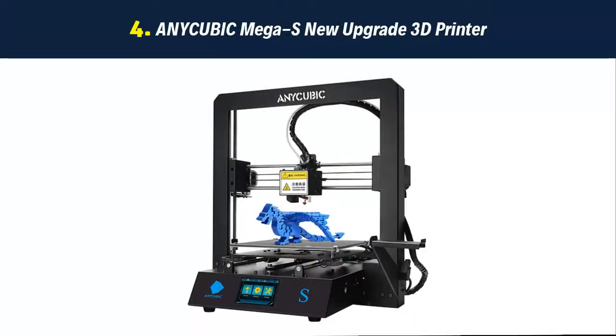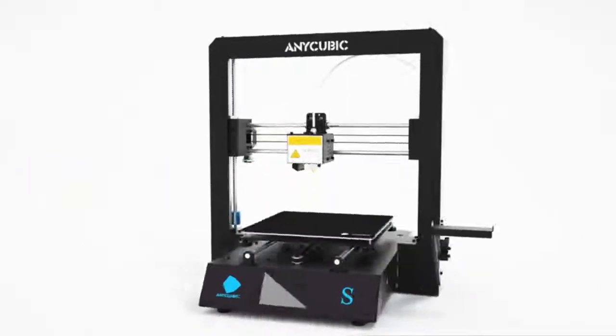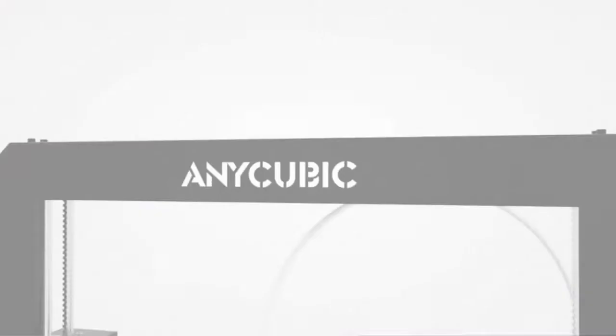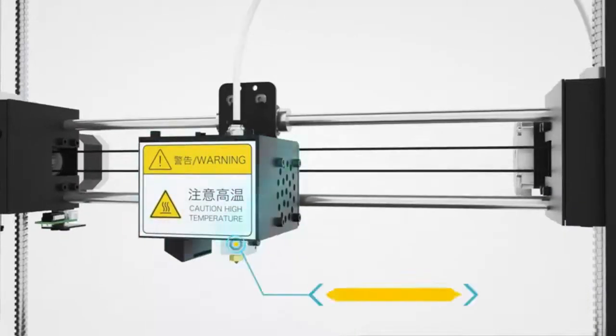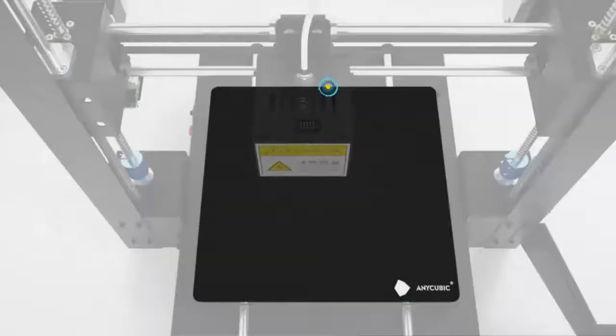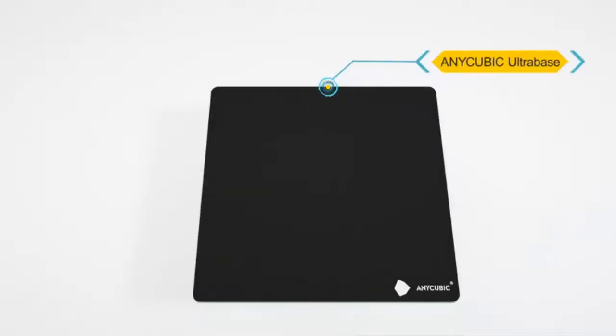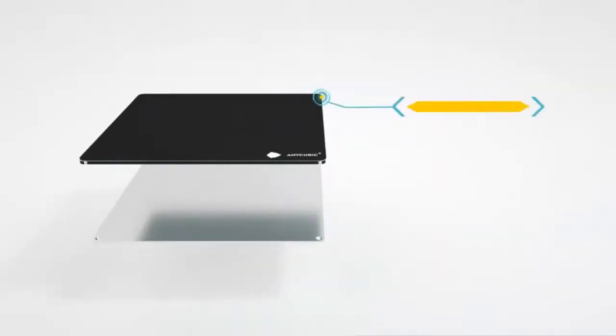Our list at number four: Anycubic Mega S new upgrade 3D printer. Works out of the box. Three steps to set up Anycubic Mega S 3D printer with 8 screws and 3 cables for minutes, not only meets fast assembly needs for expert users, but also friendly use to beginners. Printing volume reaches 8.27x8.27x8.07 inches.